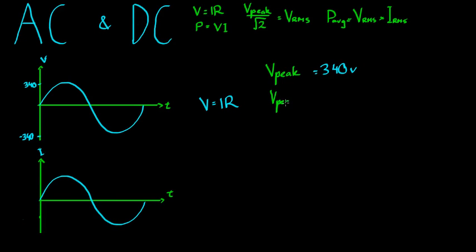We also have the second concept, V peak to peak. And the naming here hints at what this is. It's the magnitude of the difference between the top peak and the bottom peak. And that would be here 340 times 2 or 680. So V peak to peak equals 2 times V peak.